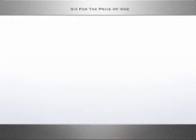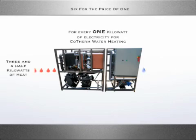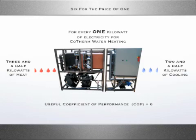Let's look at it this way: 6 for the price of 1. For every 1 kW of electricity used by Cotherm, the facility receives 3.5 kW of heat and 2.5 kW of cooling. Traditional heat pumps, on the other hand, give heating or cooling, but not both benefits at the same time. This is referred to as having a useful coefficient of performance equivalent to 6.